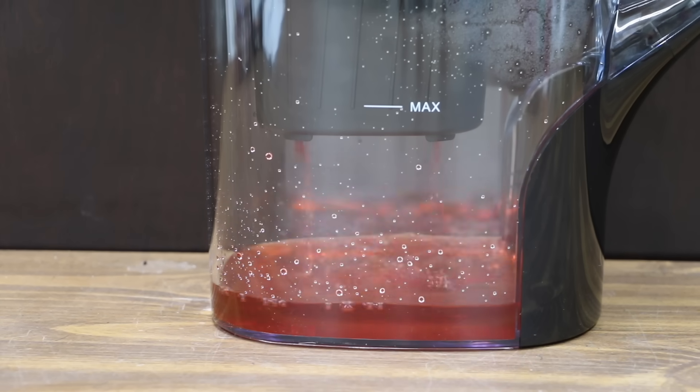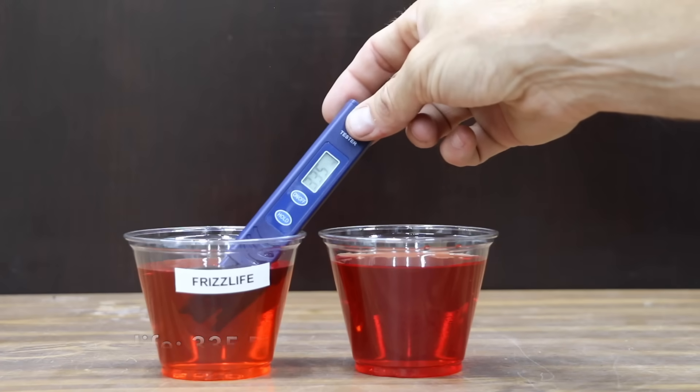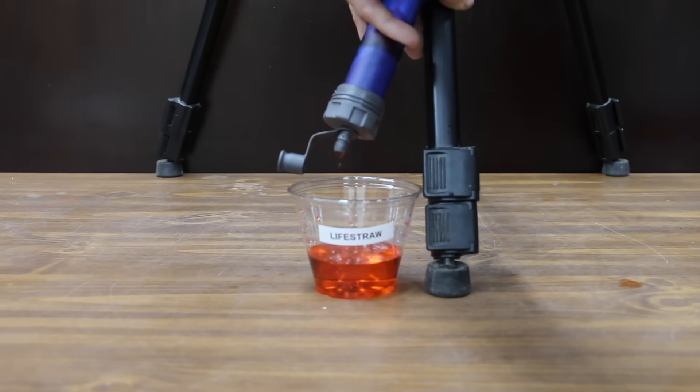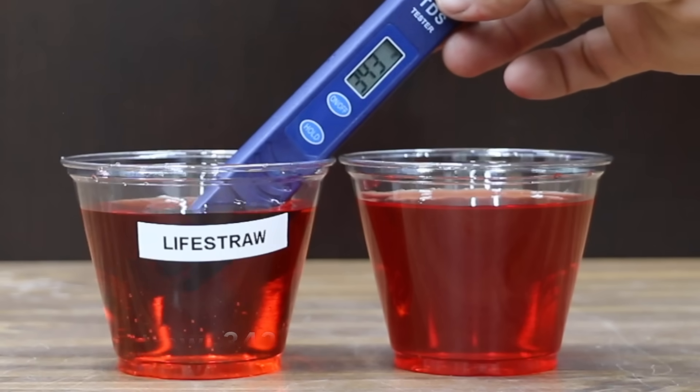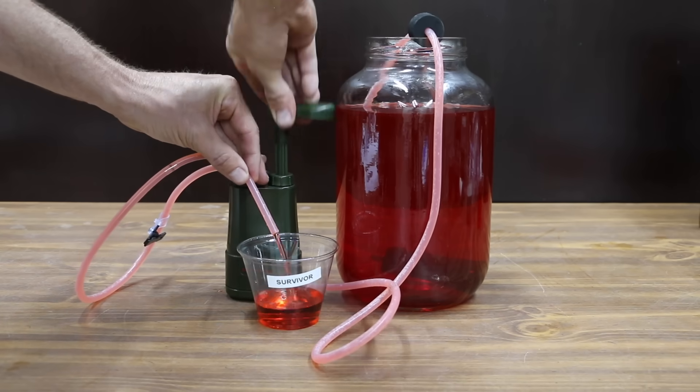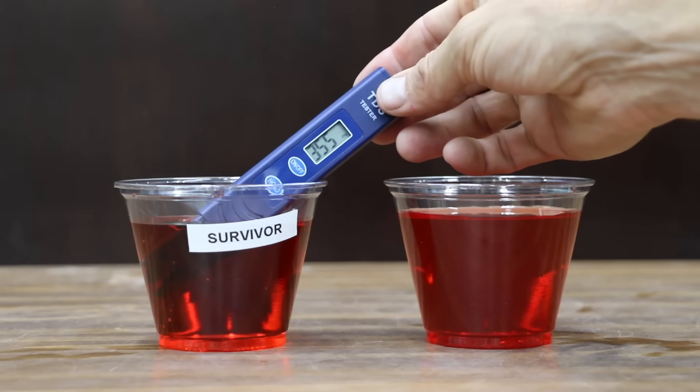The appearance of the water improved slightly with the Frizz Life, but it didn't perform nearly as well as the Zero Water. 335 parts per million. The appearance of the LifeStraw water looks to be about the same as the Frizz Life. 343 parts per million. The Survivor makes pretty quick work of filtering the water, but the water looks about the same as the LifeStraw. 355 parts per million.